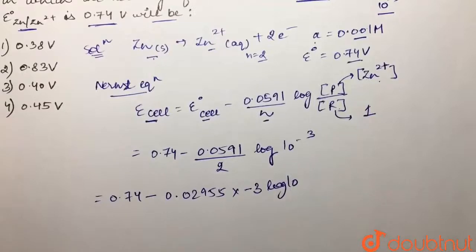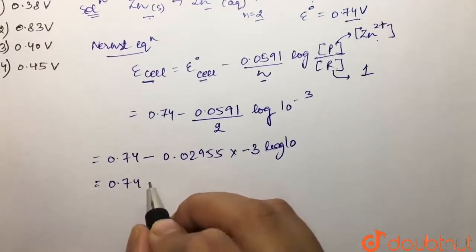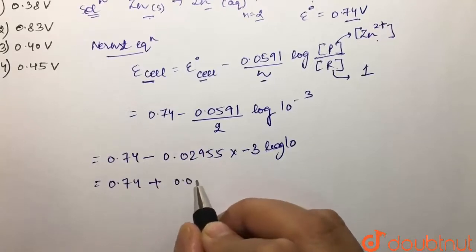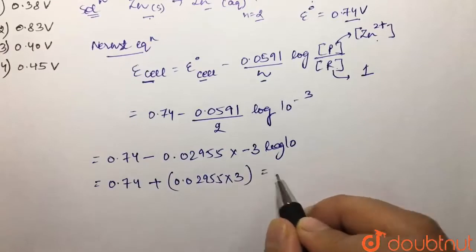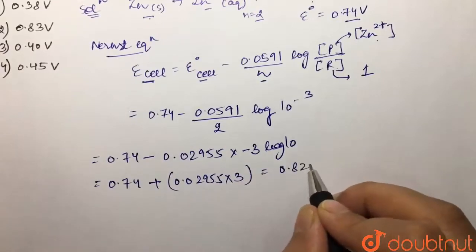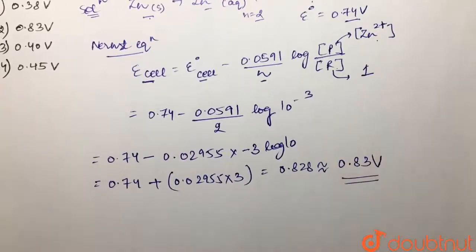So now this minus minus would become positive, so this would be 0.74 plus 0.02955 into 3. So this comes out to be 0.828 or we can say nearly 0.83 volts. So this is the E of cell that we are getting.